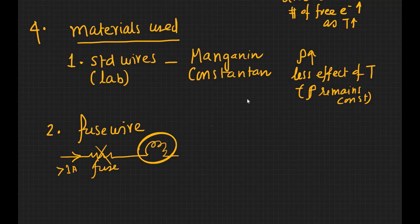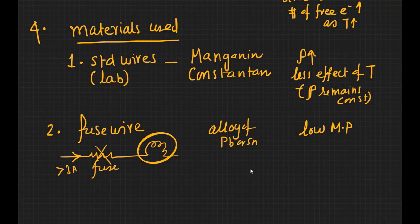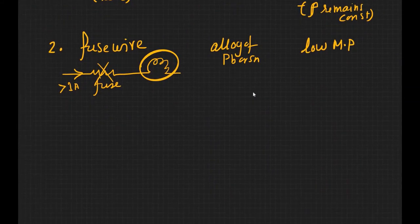You can design your fuse like that such that beyond a certain current the fuse will break. So usually for this reason you use alloy of lead or tin, and the reason why you use that is because it has a low melting point.